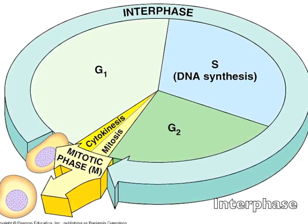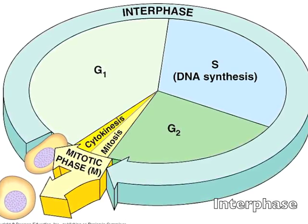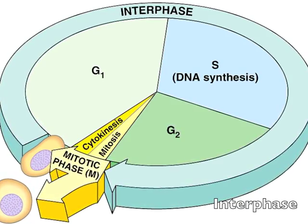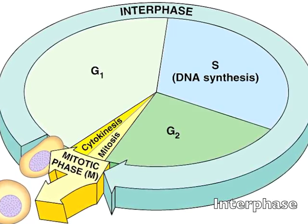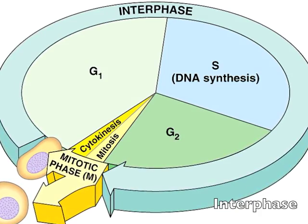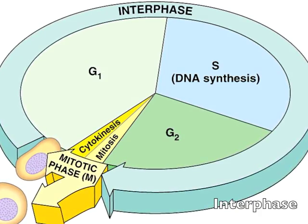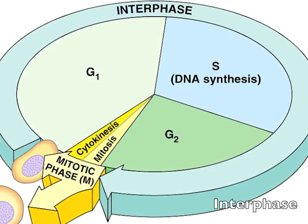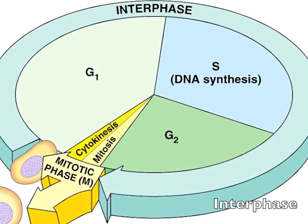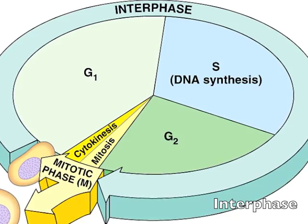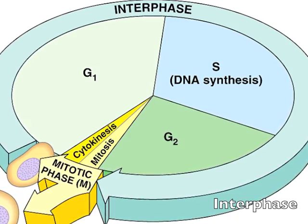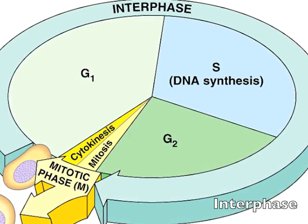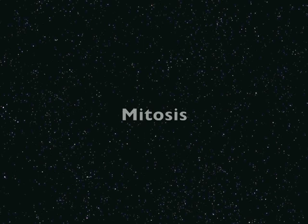The first step is interphase, which prepares a cell for mitosis. 90% of the cell division is spent within this phase. Interphase consists of three phases: the cell grows during G1, continues to grow and copies its chromosomes during S, and then grows even more and completes final preparations for mitosis during G2. Once interphase is started, the cell must follow through and complete mitosis and cytokinesis.